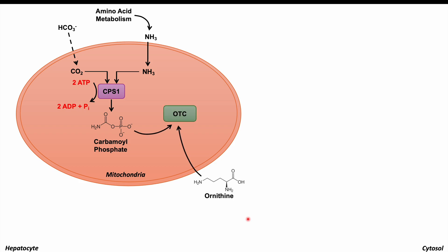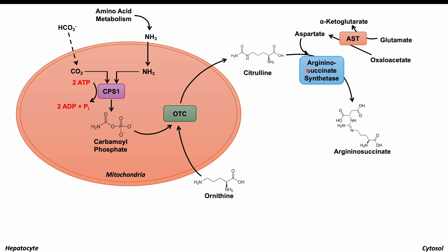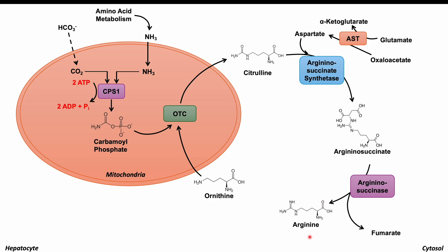Once we have carbamoyl phosphate, we use ornithine coming from the urea cycle outside the mitochondria — in the cytosol — and combine both carbamoyl phosphate and ornithine by the enzyme OTC or ornithine transcarbamoylase to form citrulline. Citrulline then combines with aspartate using argininosuccinate synthetase to form argininosuccinate. Argininosuccinate is acted on by argininosuccinate lyase to form arginine and the byproduct fumarate. Arginine is then acted on by arginase to form urea, completing the urea cycle, and regenerating the ornithine we started with.